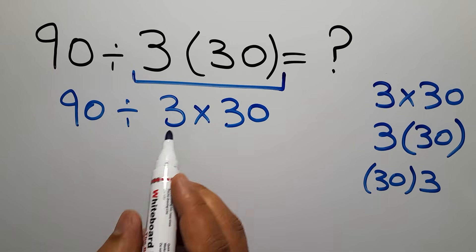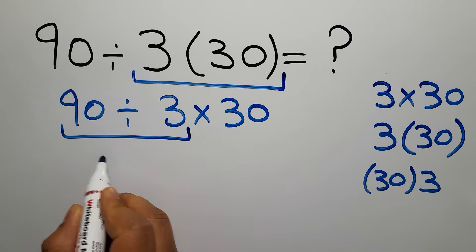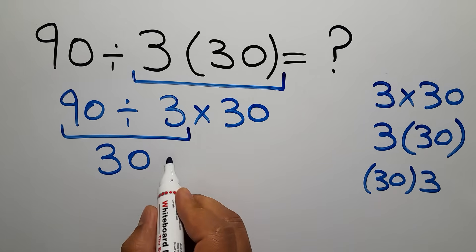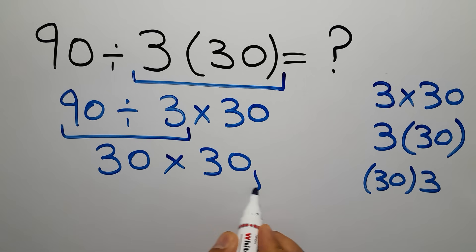90 divided by 3 gives us 30. So 30 times 30 which equals 900. Therefore our final answer to this problem is 900.